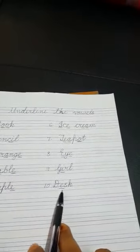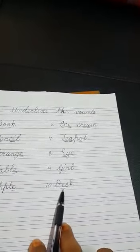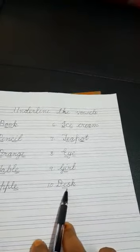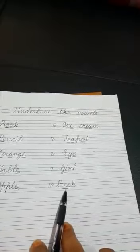Now number ten is desk. D, E, S, K. So here only E is here. So E is the vowel. We will underline vowel over here.